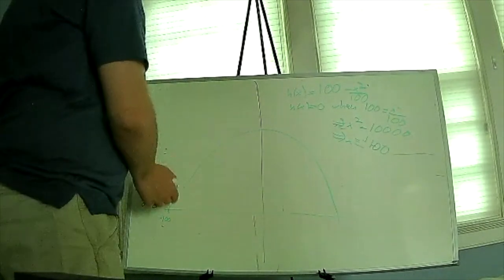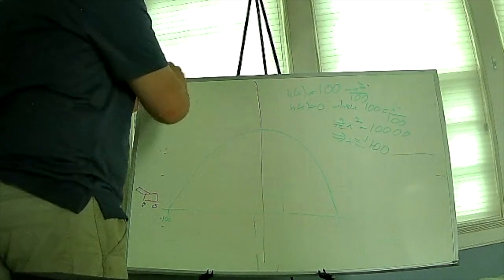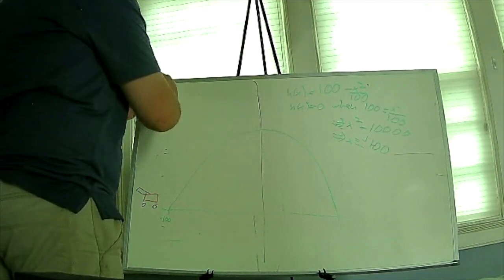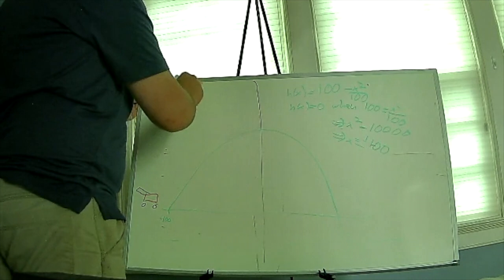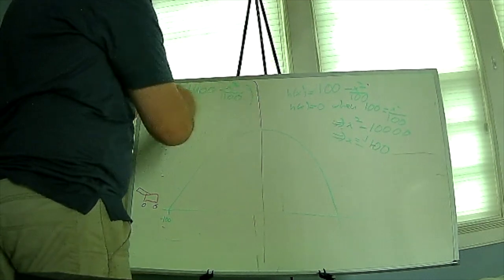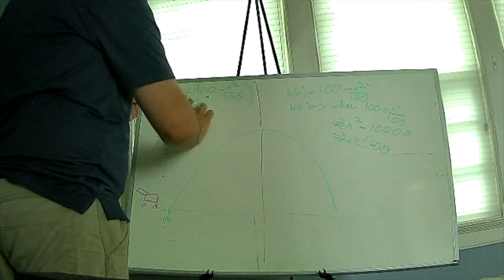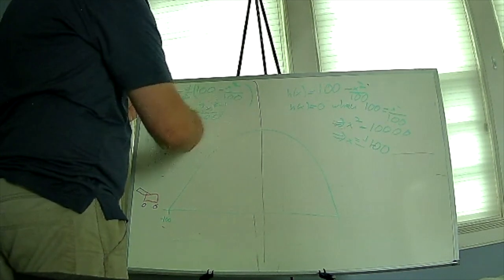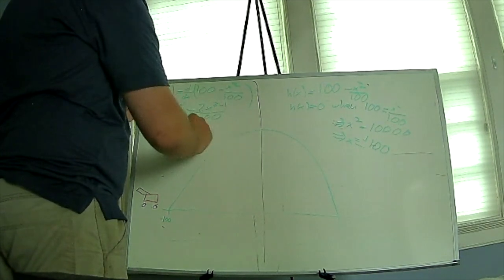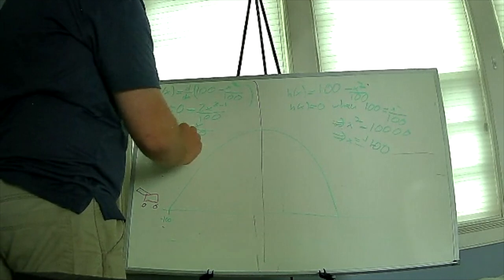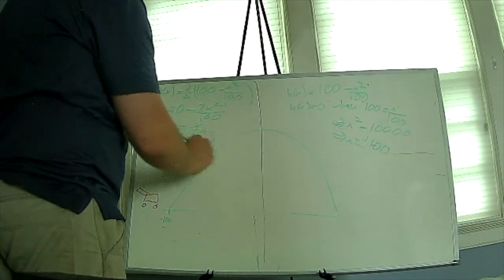So now the question is, what is the slope? Let's see what the slope is at this point. The slope at x equals negative 100 is the derivative of h(x), which equals d/dx of 100 minus x squared over 100, which equals 0 minus 2x over 100, which equals negative x over 50. Substituting in negative 100 for x gives us negative of negative 100 over 50, or 2.